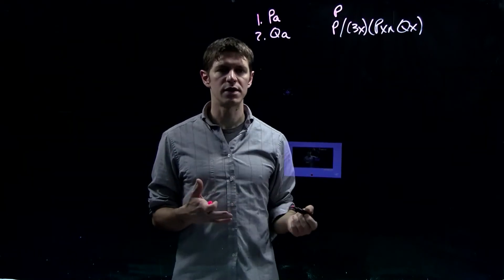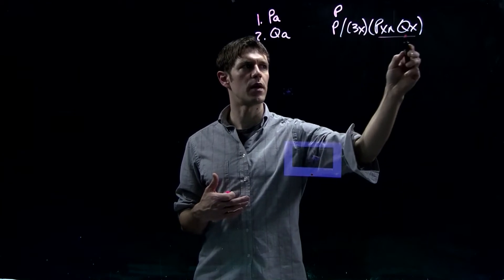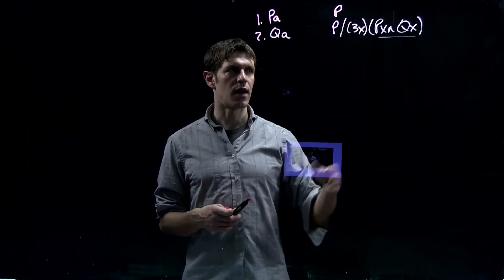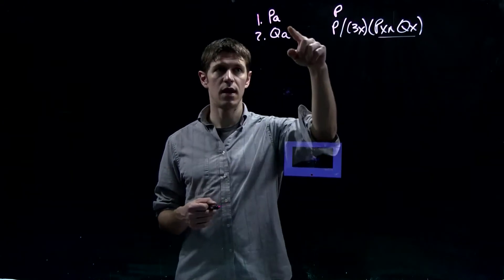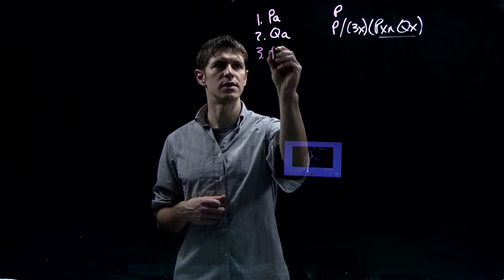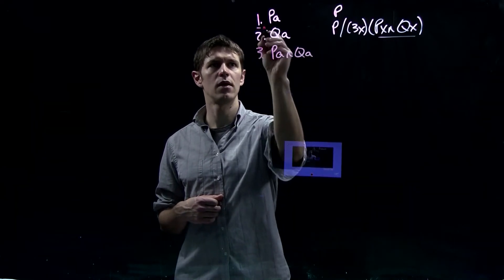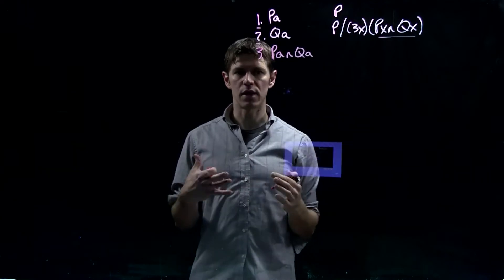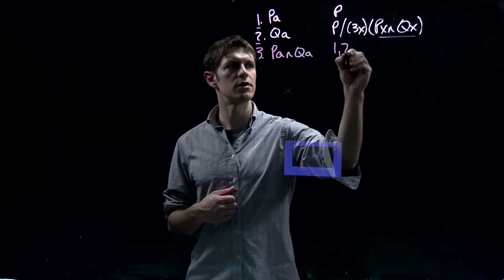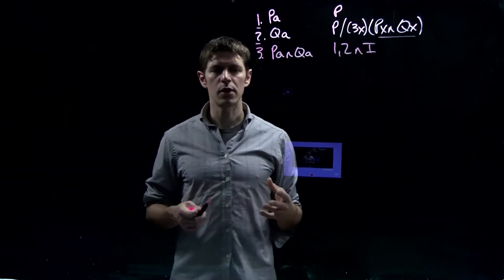We'll start by reasoning from PA and QA. We can't replace the names A with X directly — all we can do here is reason to PA and QA, taking line one and line two and forming a conjunction out of those two formulas. So this step is by conjunction introduction from lines one and two.